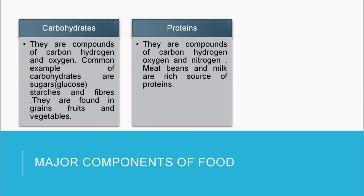Then proteins. Proteins are organic compounds which are made up of carbon, hydrogen and oxygen, and besides that they contain another element: nitrogen. Rich sources of proteins are milk, beans, all the pulses and legumes.